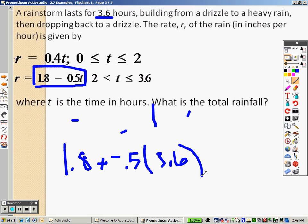So when I plug that in, I get 1.8 times negative, or sorry, 1.8 plus negative 0.5 times 3.6. And we end up getting 0 as our answer when we plug that in. We end up getting 0 as our answer. So what's the total rainfall? Total rainfall would be 0, which doesn't seem to make any sense at all.